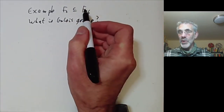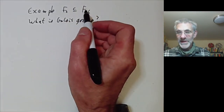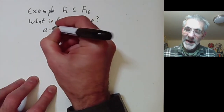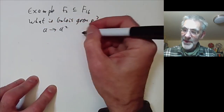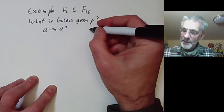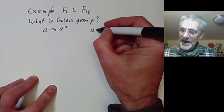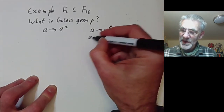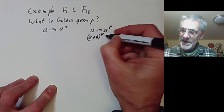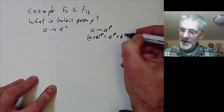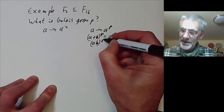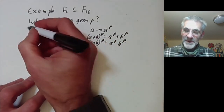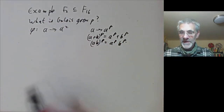There is one obvious automorphism which takes a to a². Remember that in characteristic p, the map taking a to aᵖ is a homomorphism because (a+b)ᵖ = aᵖ + bᵖ and (ab)ᵖ = aᵖ·bᵖ. This is the famous Frobenius endomorphism.